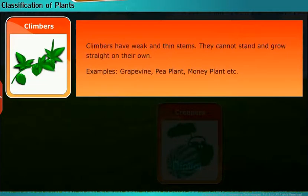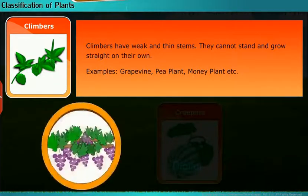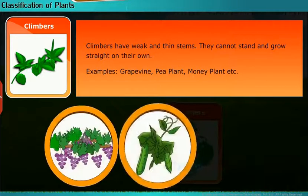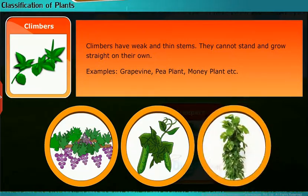Climbers have weak and thin stems. They cannot stand and grow straight on their own. Examples include grapevine, pea plant, and money plant.